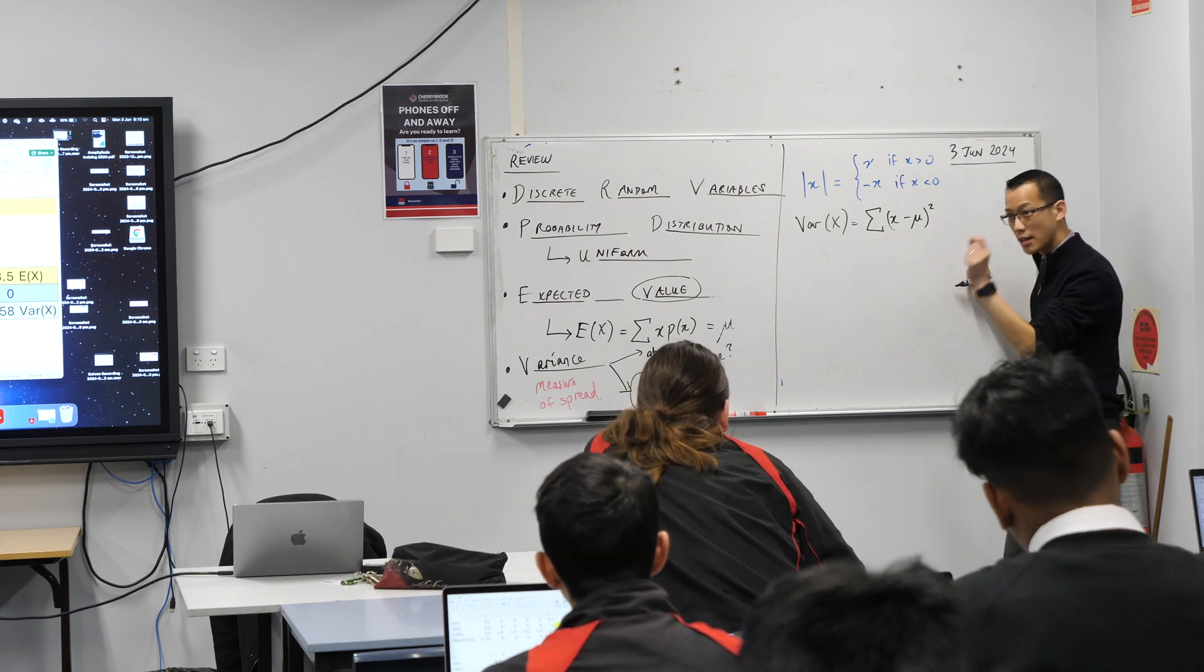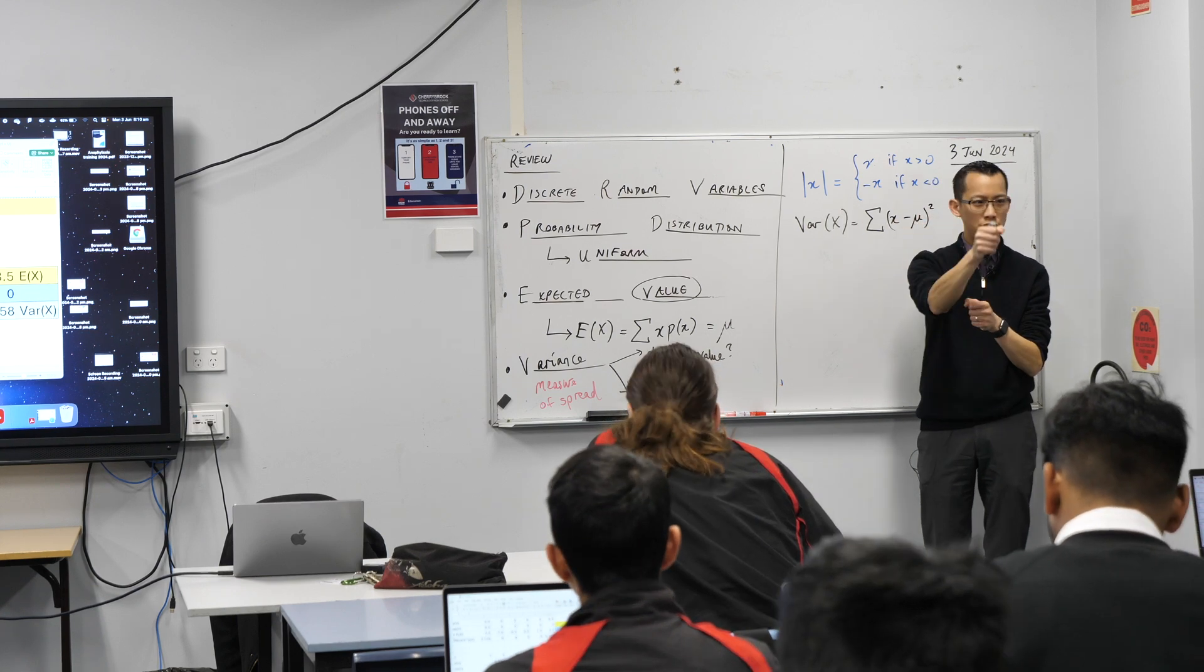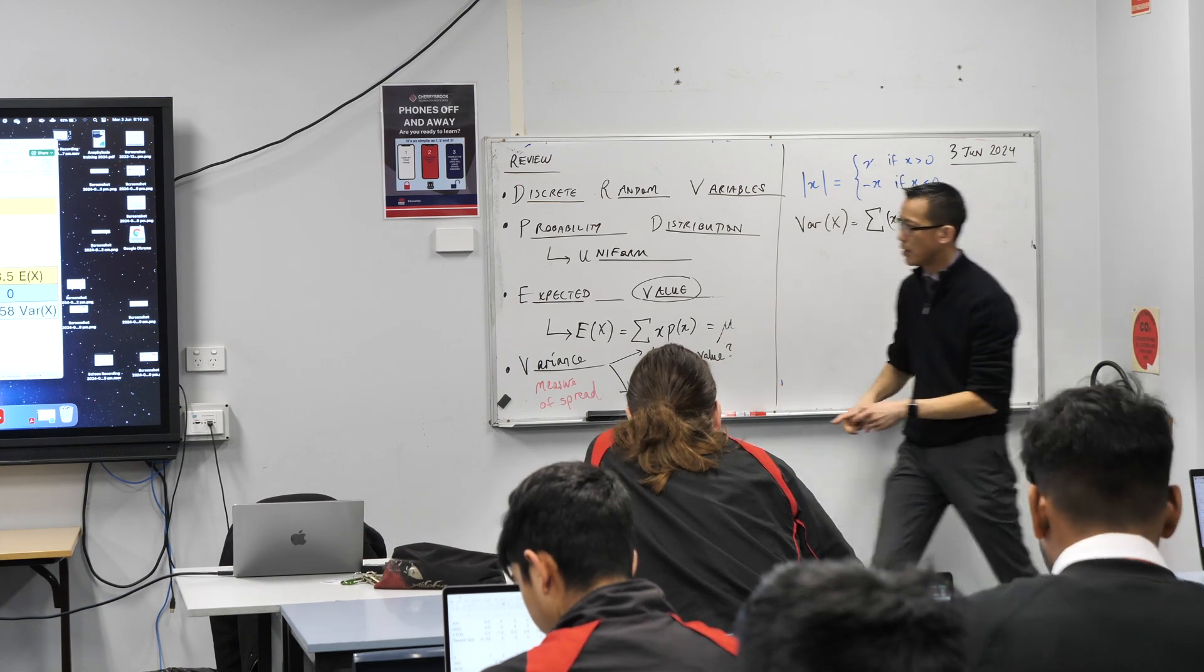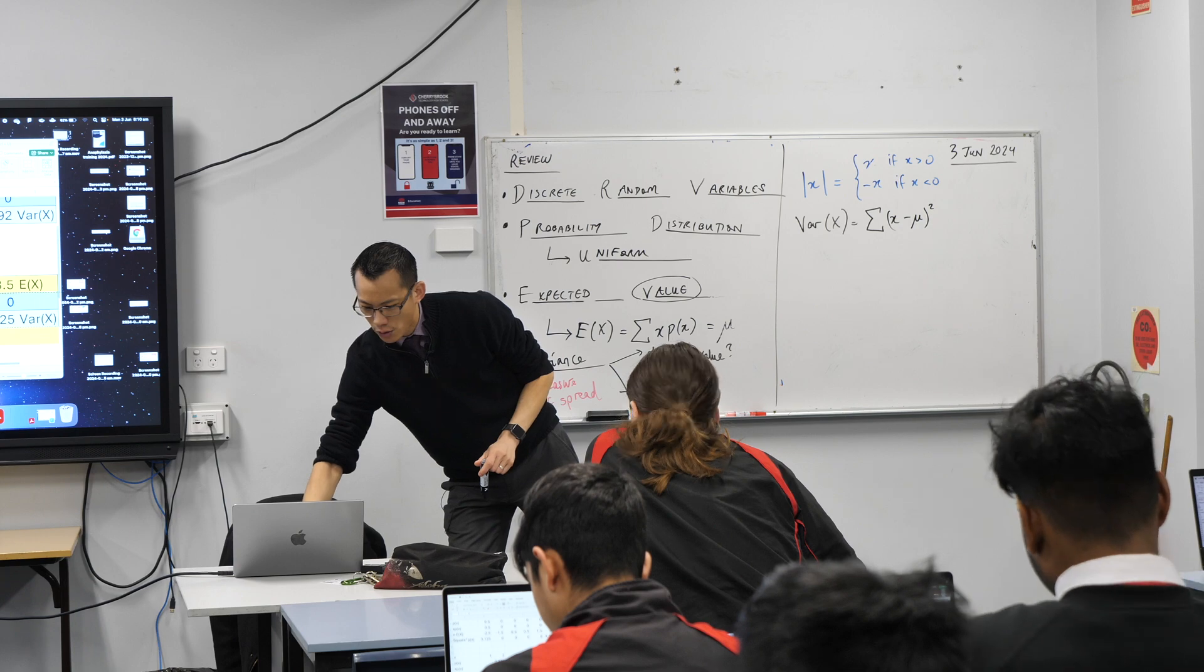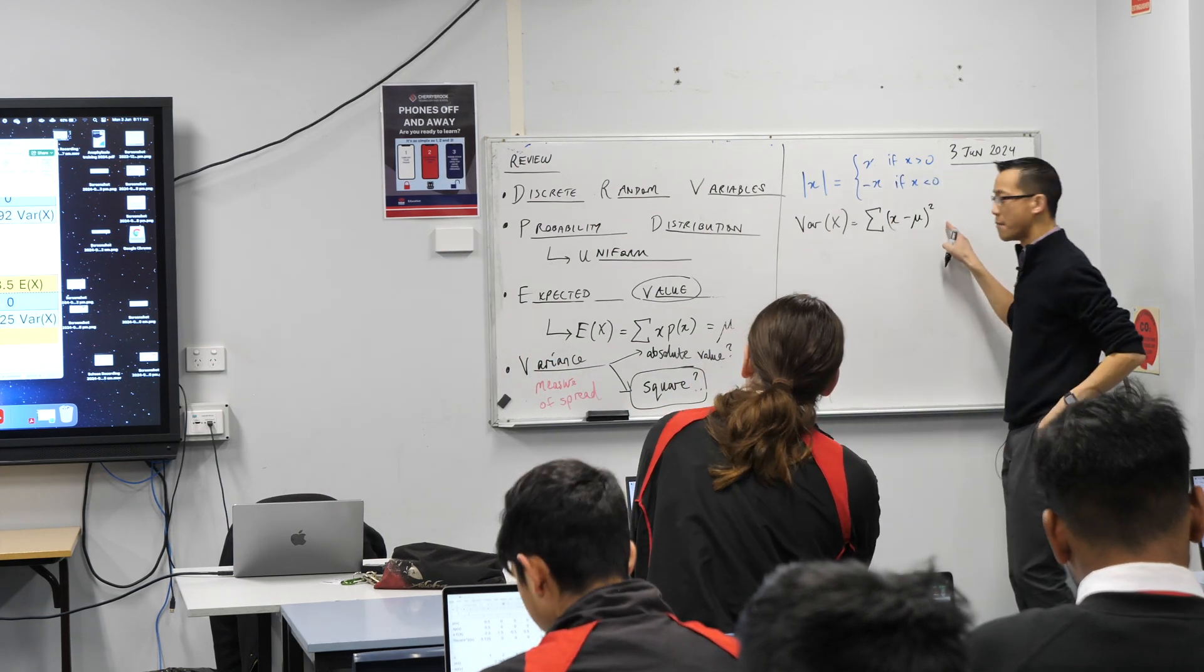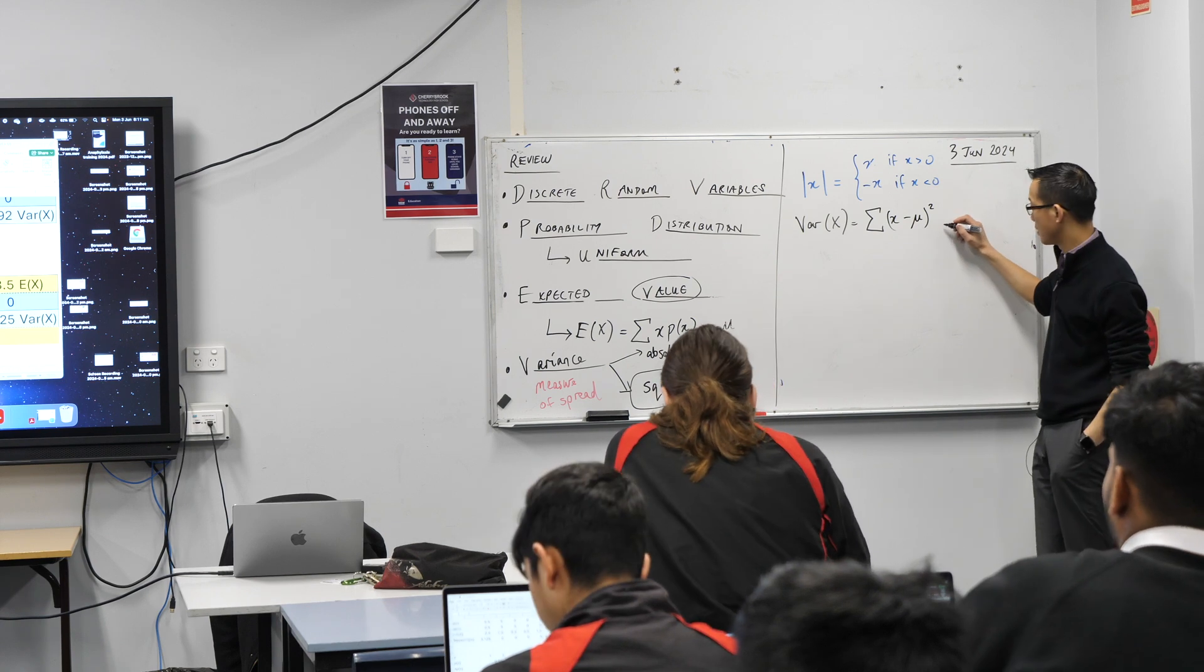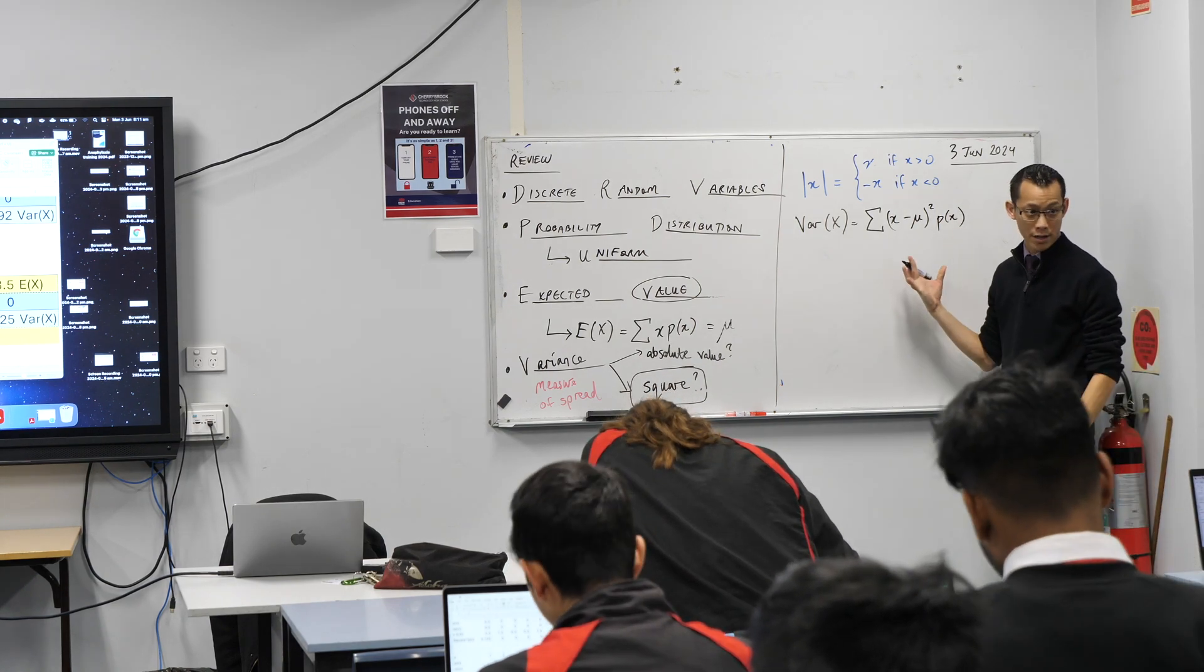We took that, and then the last thing we did was, just like with the expected value, we wanted to weight, according to each deviation. Some deviations are more likely than others. In the case of this 1 and 6 die, all of these deviations, they're irrelevant, because they don't happen. So therefore, I multiplied by what, to finish? The probability of each of those. This is what we call variance.